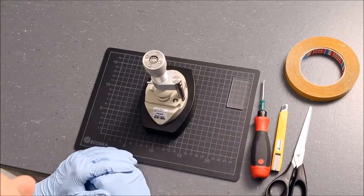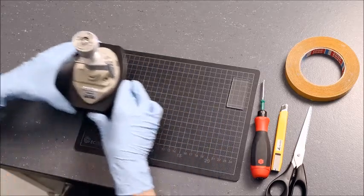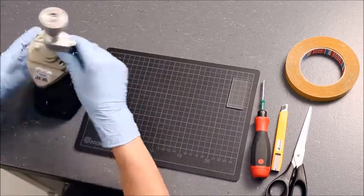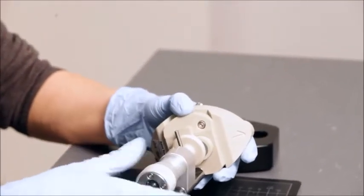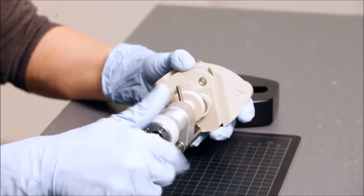First, you need to disassemble the cell. Loosen the adjustment knob. You do not need to remove the knob completely.